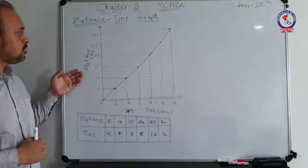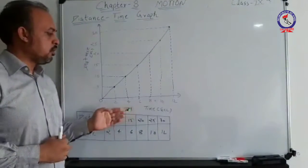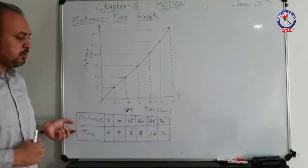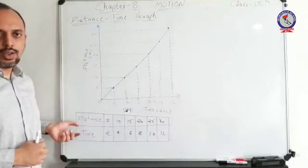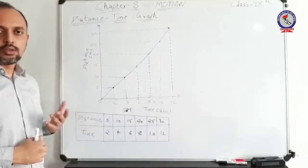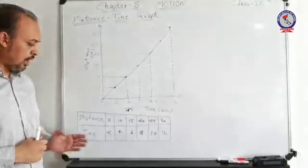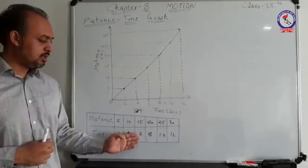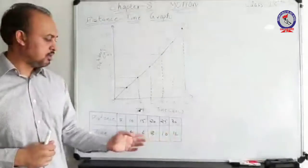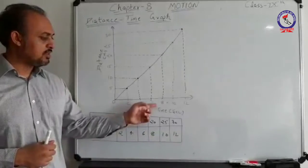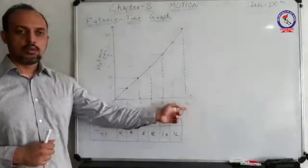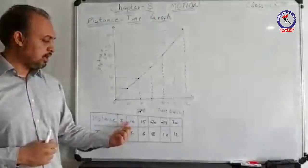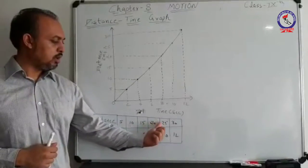I have plotted distance on the vertical axis and time on the horizontal axis. These are the pairs of values taken into account for determining whether the given motion is uniform or non-uniform. On the time axis: 2, 4, 6, 8, 10, 12 seconds. Corresponding values on the distance axis: 5, 10, 15, 20, 25, 30.